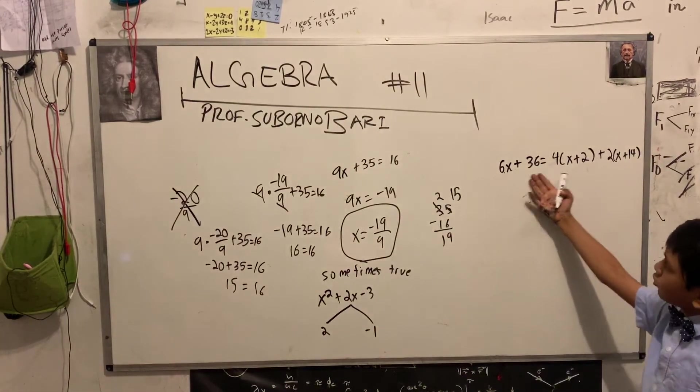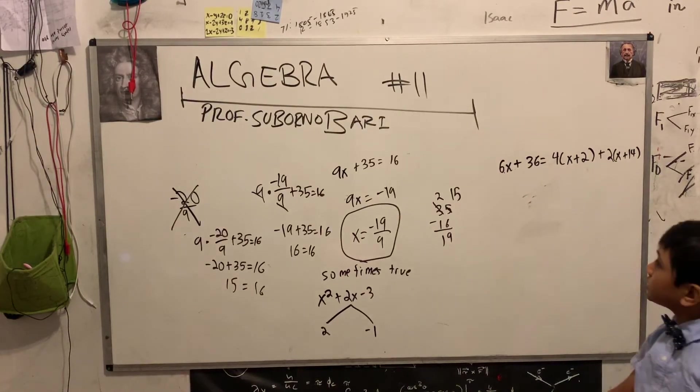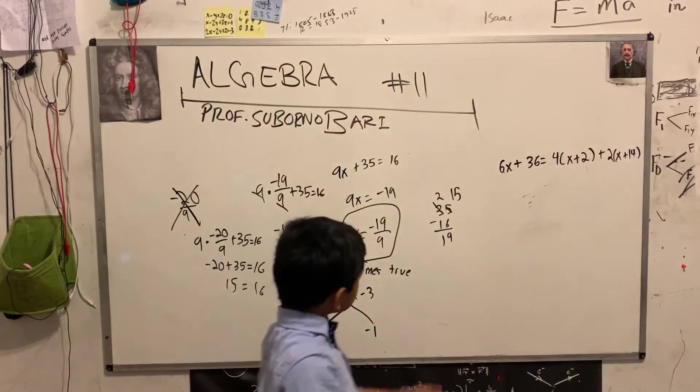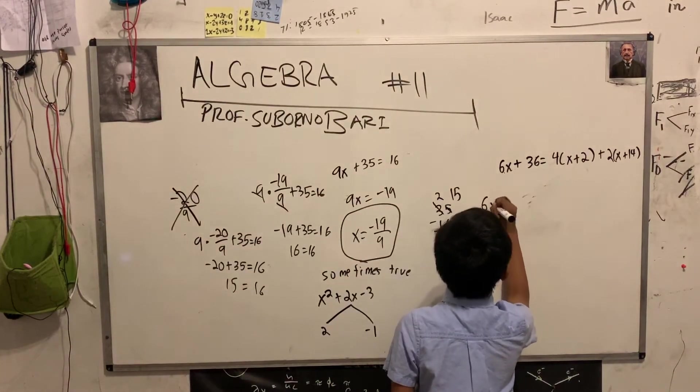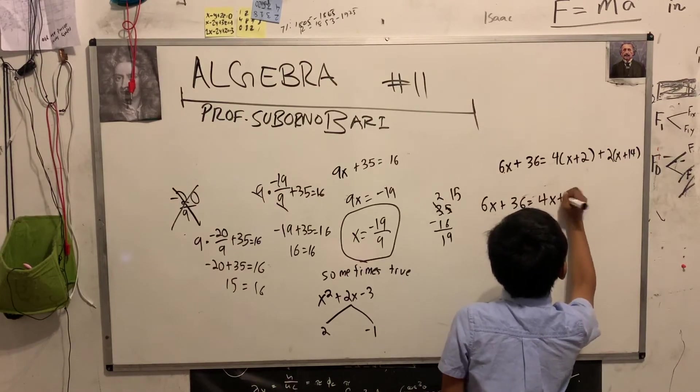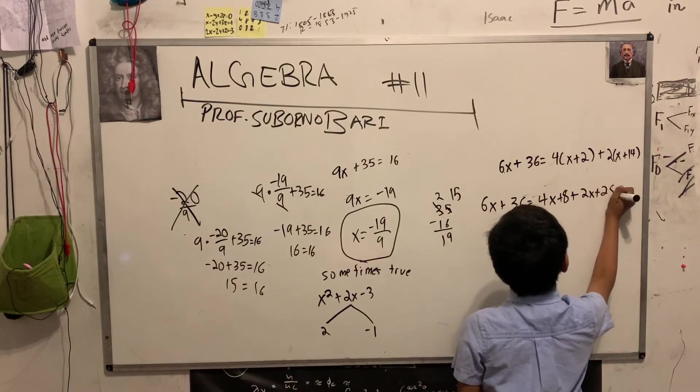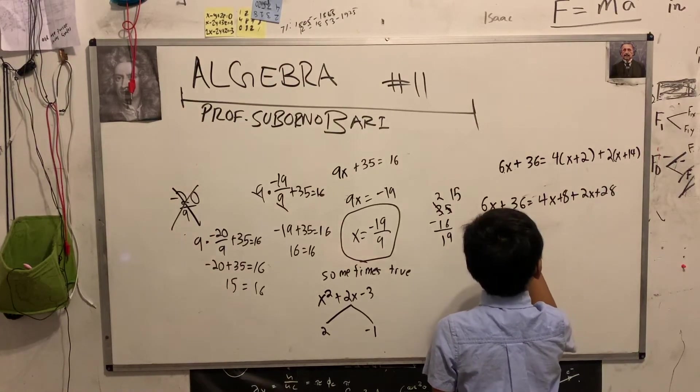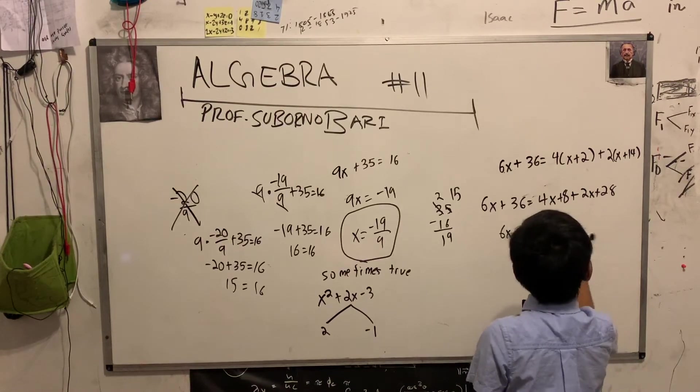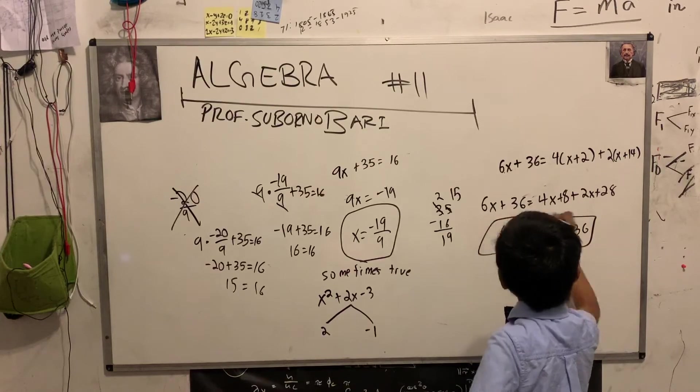So, this might seem a little tricky to understand at first. How can I understand it? But, well, after a while you'll see it. So, we can use the distributive property to our advantage. 2x plus 8. And then, 2x plus 28. So, 6x plus 36. We can add up the like terms. Equals 6x plus 36.